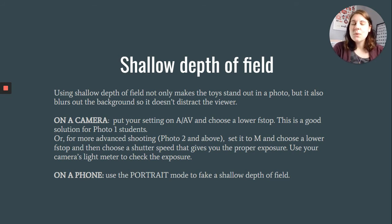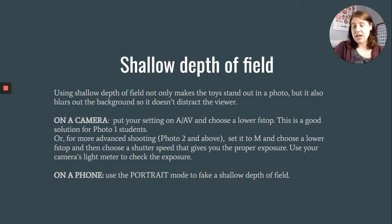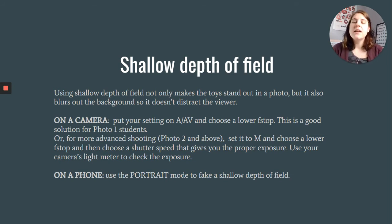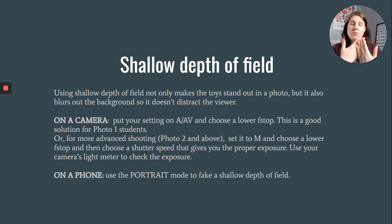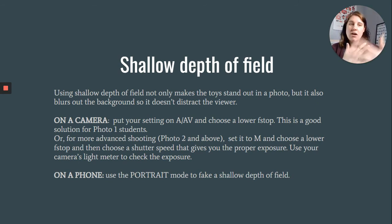But most of you are going to use a phone. On an iPhone you can use portrait mode to create a faked depth of field. Android users — I'm an iPhone user so I'm not positive if your phones have something like this, but oftentimes if you get really close to what you're photographing, the background will often blur out on its own.